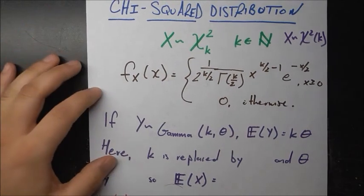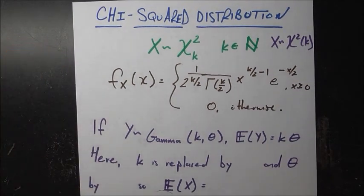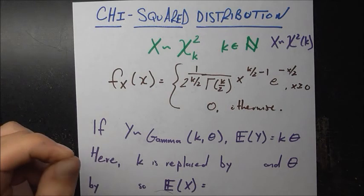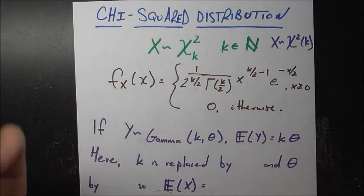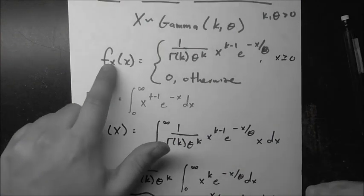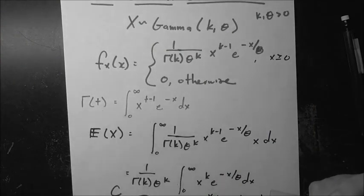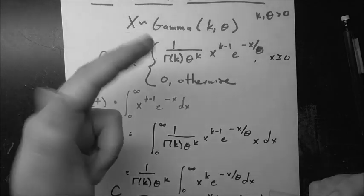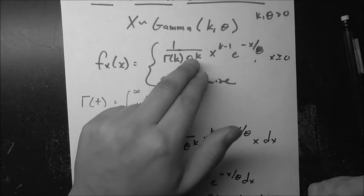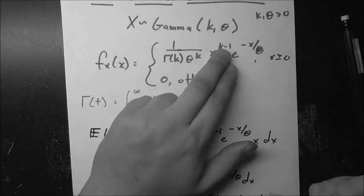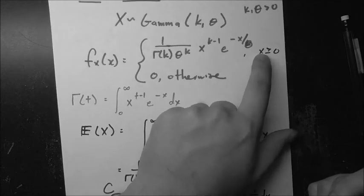This PDF might seem arbitrary, but let me tell you where it's from. Going back to the gamma distribution, the PDF is f_X(x) = 1 over (Gamma(k) · theta^k) · x^(k-1) · e^(-x/theta), as long as x is greater than or equal to 0. The gamma function is defined as the integral from 0 to infinity of x^(t-1) · e^(-x) dx.